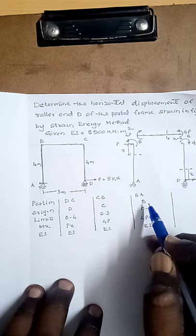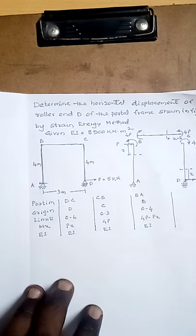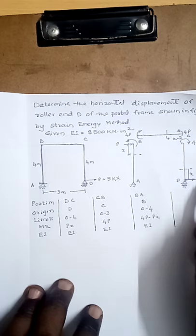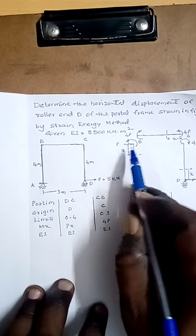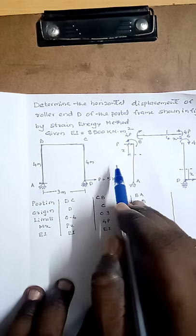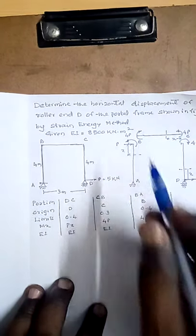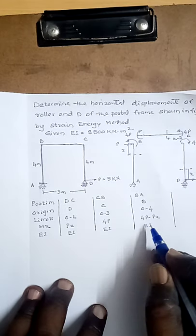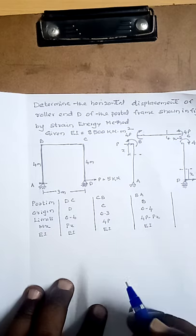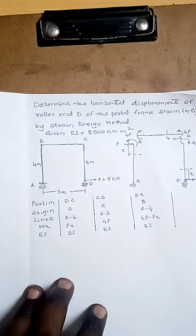Similarly, in the last portion BA, considering a section line at a distance X from B as origin, X varies from 0 at B to 4 meters at A, so the limits are 0 to 4. If we replace force P by a force and couple moment at B, the force acts towards the right at B, and in addition there is a couple moment of 4P which is sagging. The bending moment is due to the couple moment 4P (sagging) plus P×X (hogging), giving M = 4P − PX.